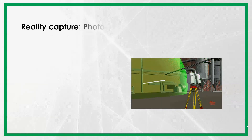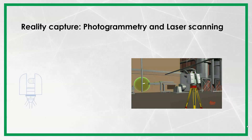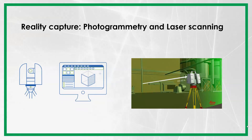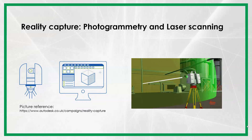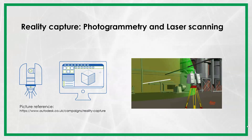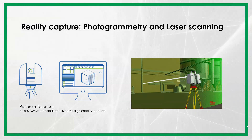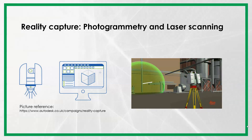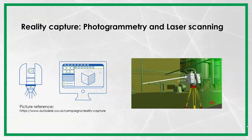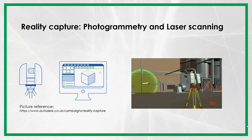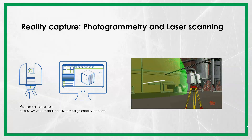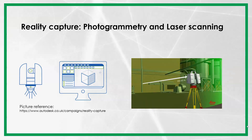There is also another very useful term related to scan to BIM, which is reality capture. Reality capture is a digital technology that enables us to create a 3D model from photographs or laser scans of a building or space. The 3D models created by reality capture can be very detailed and accurate, and they can be used in a BIM-enabled project. There is a good article and video by Autodesk about reality capture — you can see the link on the slide.